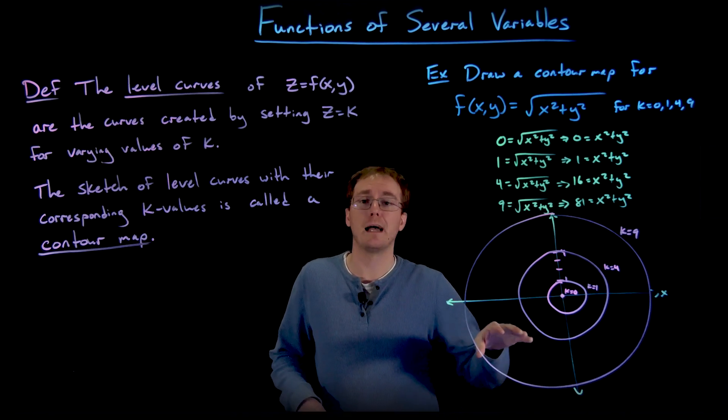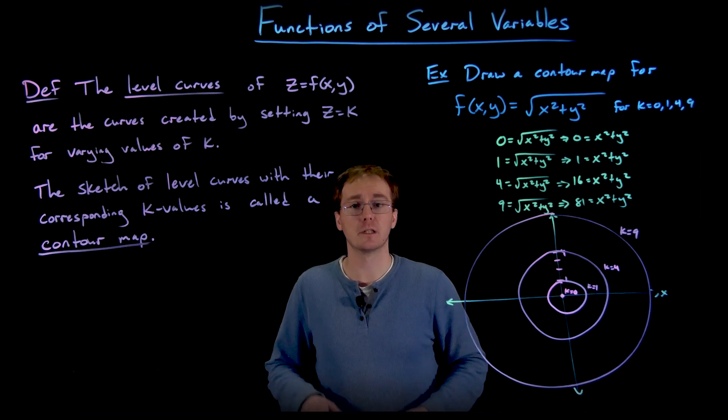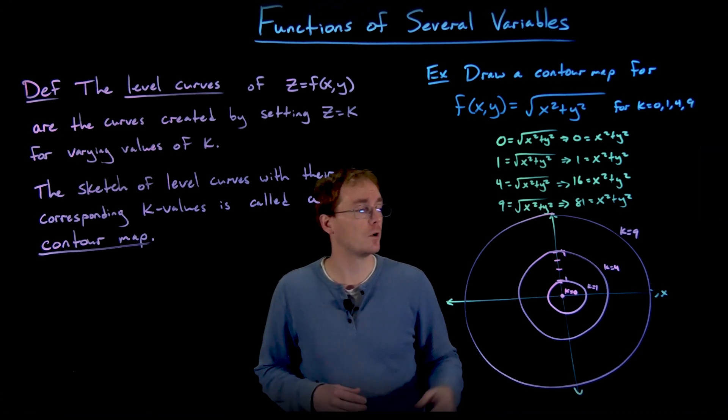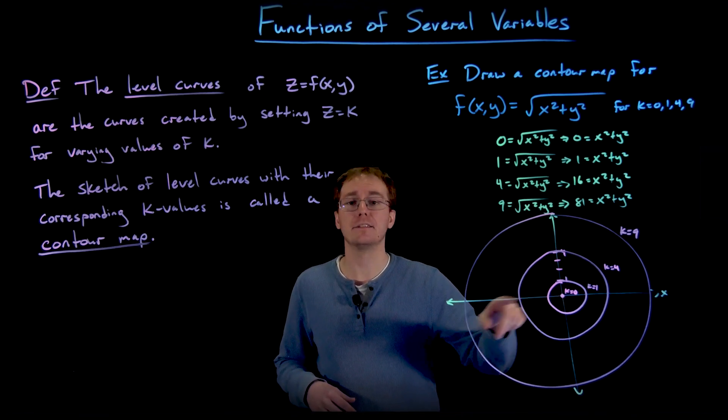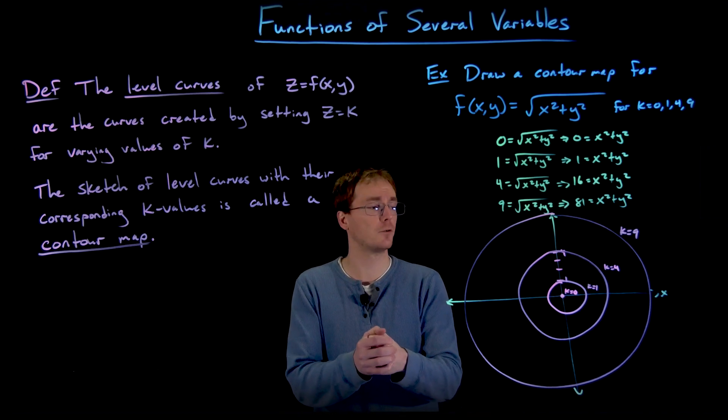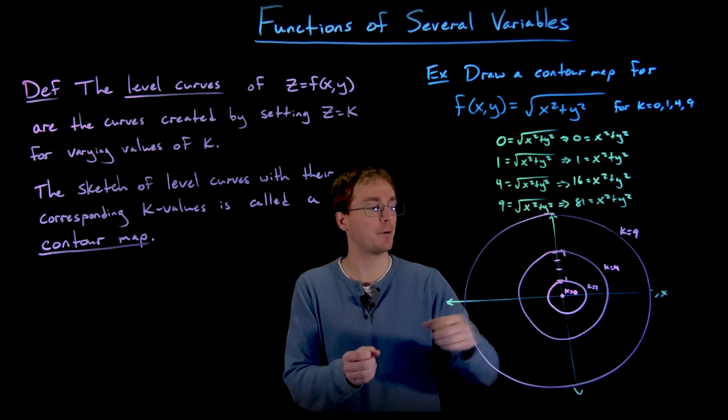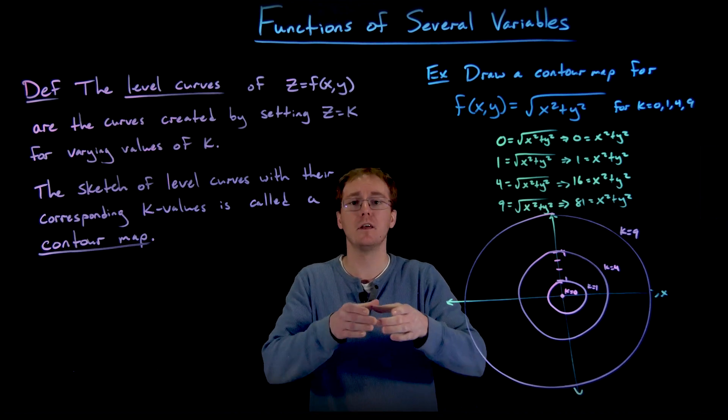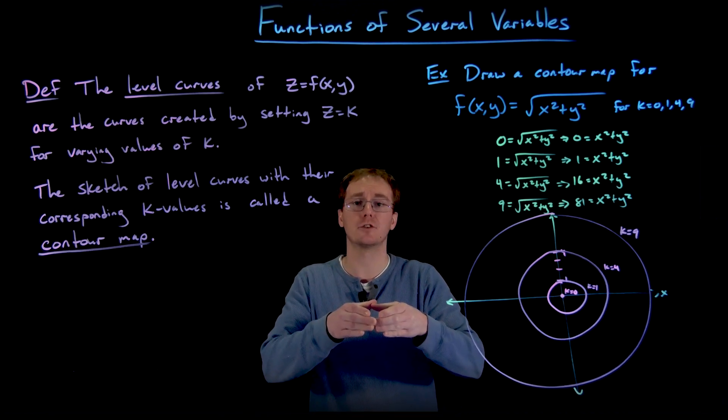And so with this contour map, we can actually visualize what this three-dimensional surface is going to look like roughly. And so when we are at the plane z = 0 or right on the xy plane at the origin, we have a single point. And then when we take a step up in altitude to the plane when z = 1, we are on a circle of radius 1.